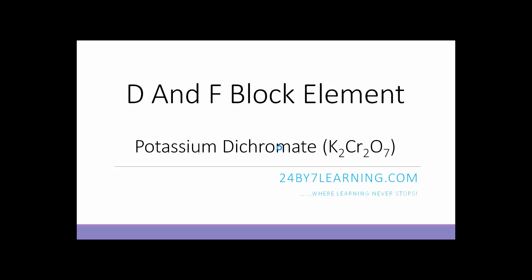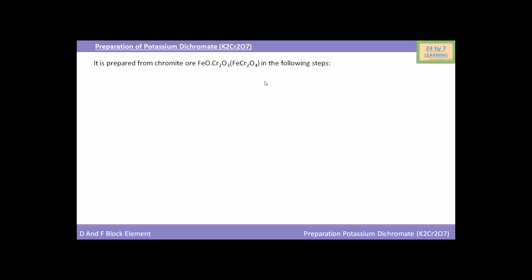Hello students. In this lesson we will discuss D and F block elements, and in this video we will see potassium dichromate, i.e. K₂Cr₂O₇. Here we will see the preparation of potassium dichromate. It is prepared from chromite ore, i.e. FeCr₂O₄, in the following steps.